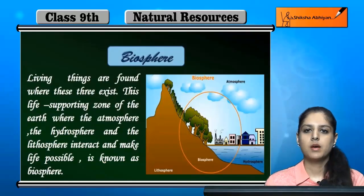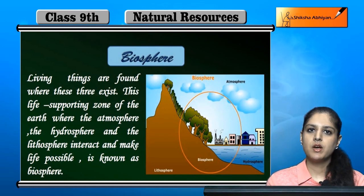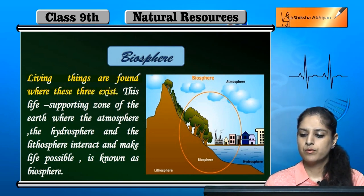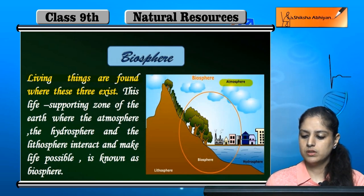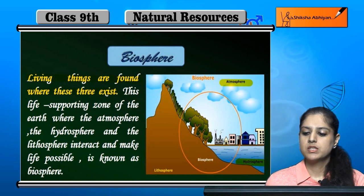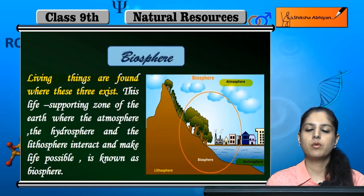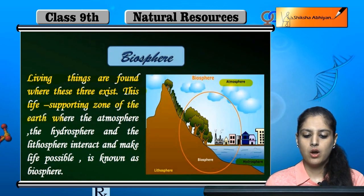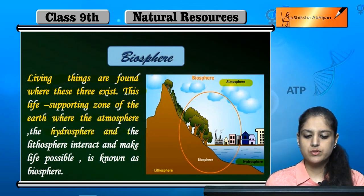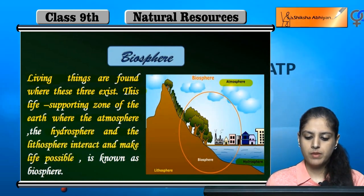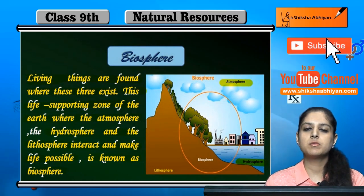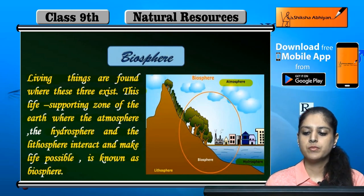Today's topic is the biosphere. Biosphere is where living things are found — where three things exist: the atmosphere, hydrosphere, and lithosphere. This life-supporting zone of earth, where the atmosphere, hydrosphere, and lithosphere interact and make life possible, is known as the biosphere. From the atmosphere we get air, from the hydrosphere we get water, and from the lithosphere we get soil and minerals.